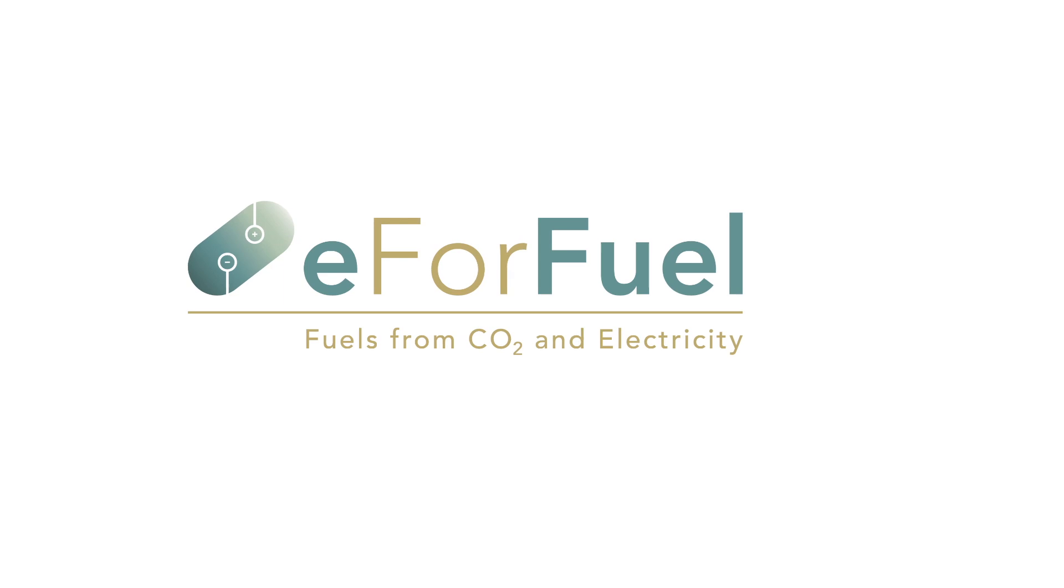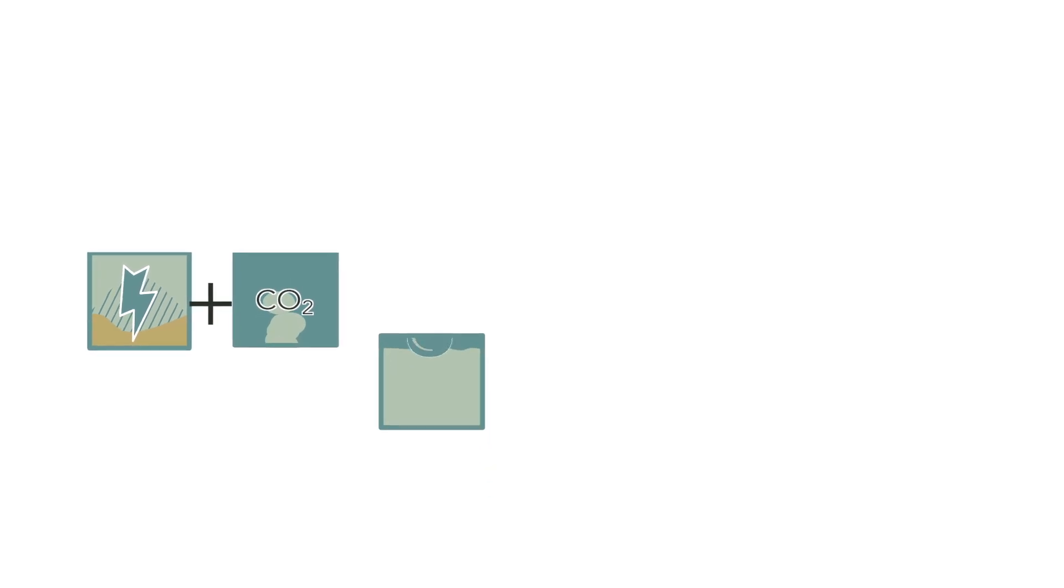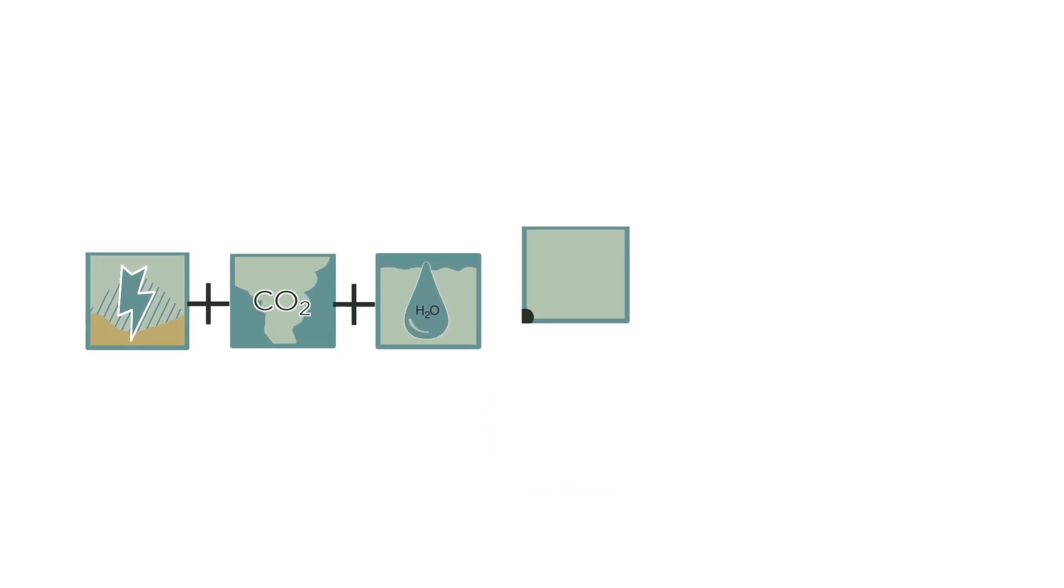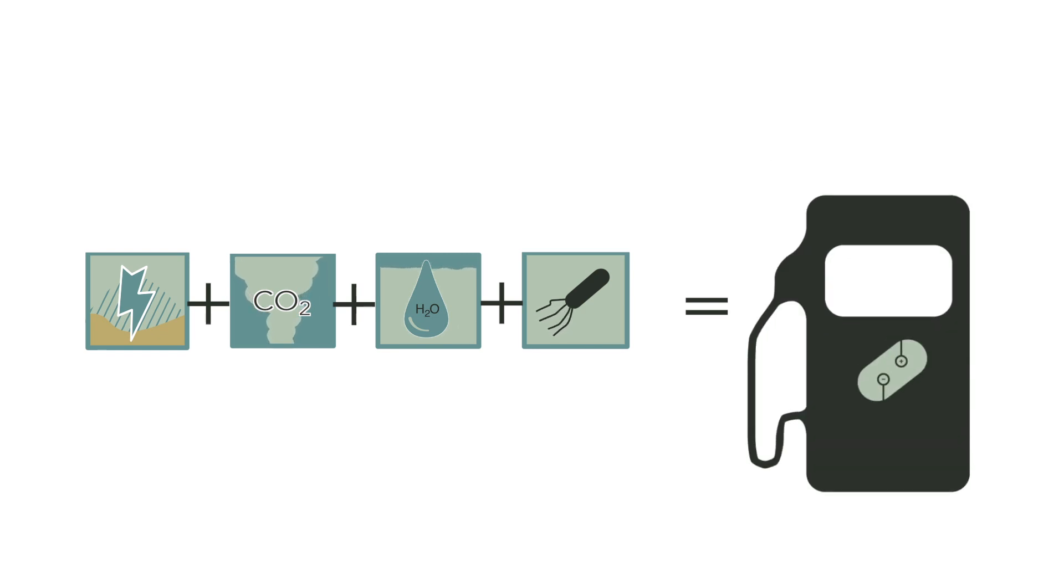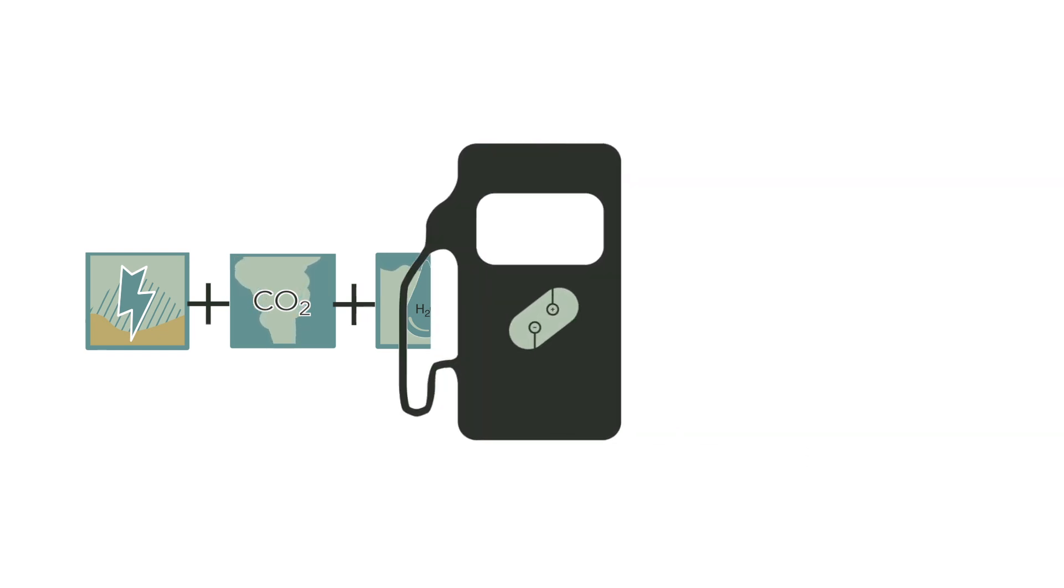E for Fuel is based on the idea of using excess electricity from renewable sources, waste from industry, water and bacteria from the lab to produce valuable biofuels that are ready for use. And this is how it works.